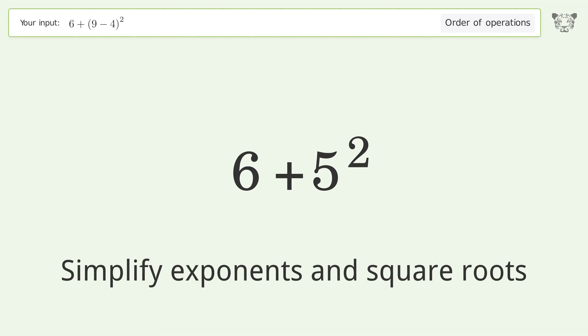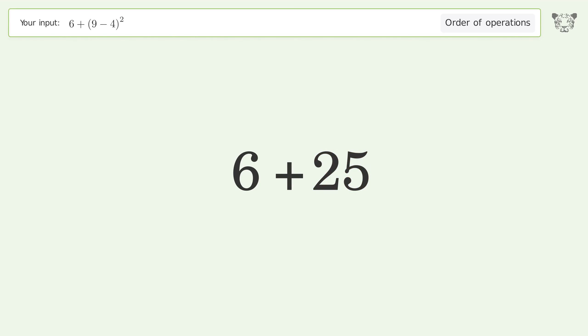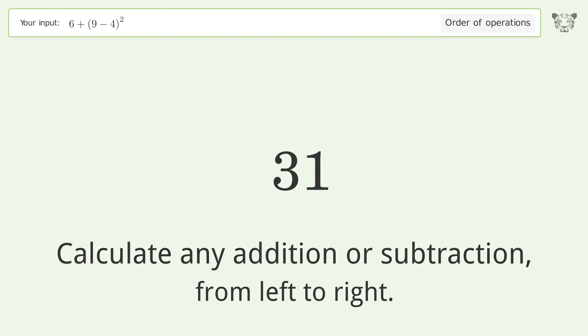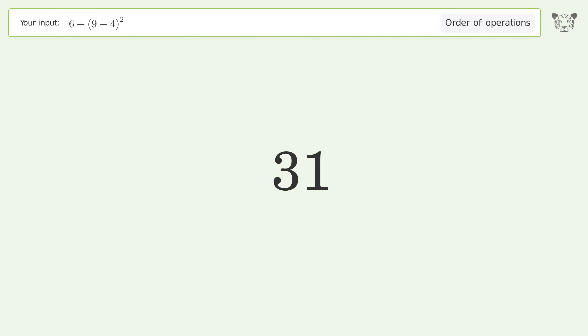Simplify exponents and square roots: 5 to the power of 2 equals 25. Then calculate addition from left to right: 6 plus 25 equals 31. And so the final result is 31.